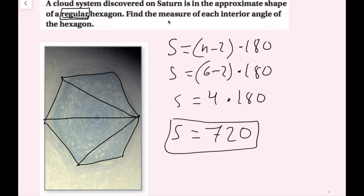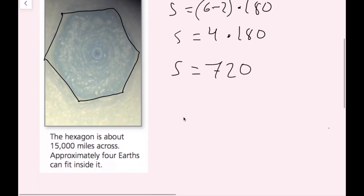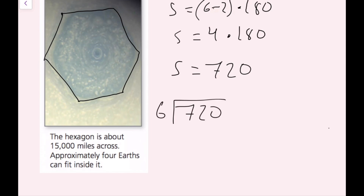720 is not the final answer — we need each interior angle, not the sum. Since all 6 angles are equal, we divide the total sum of 720 by 6. 720 divided by 6 equals 120. So each angle in the regular hexagon is 120 degrees. Now we're done.